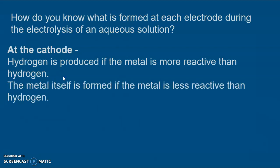Now if it's a less reactive element like copper for example, then from copper sulfate copper is less reactive than hydrogen in the reactivity series so copper would be formed at the cathode from the copper ions.